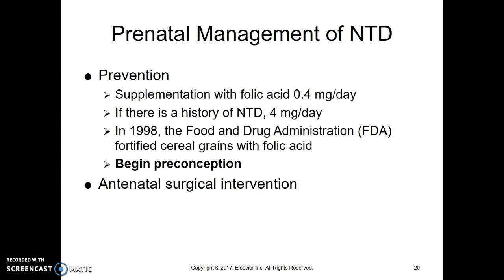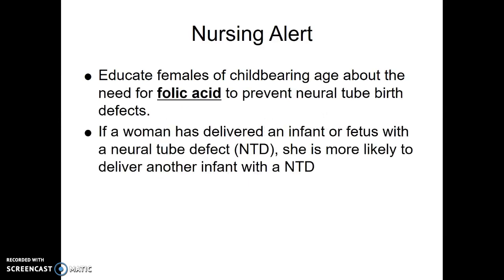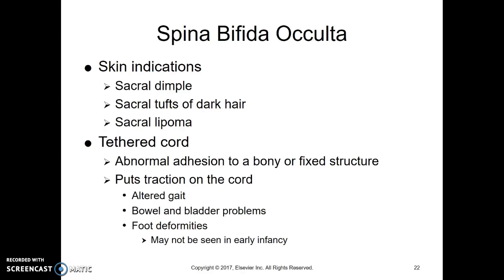There is also a higher risk if you've had one child with a neural tube defect — you're at higher risk for having another. The normal supplement is 0.4 milligrams per day, but if there's a history of neural tube defect, we raise that to 4 milligrams per day. There is a nursing alert in the book: we want all women of childbearing age taking folic acid to prevent this, and if they've had a child with a neural tube defect, they are at higher risk for another.